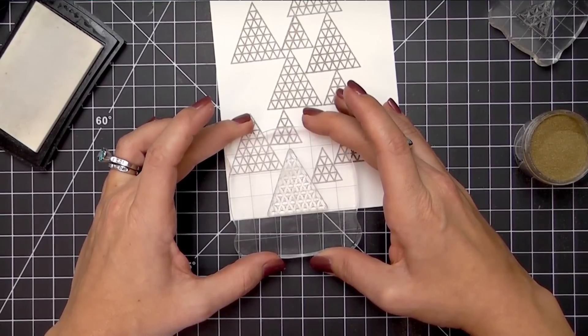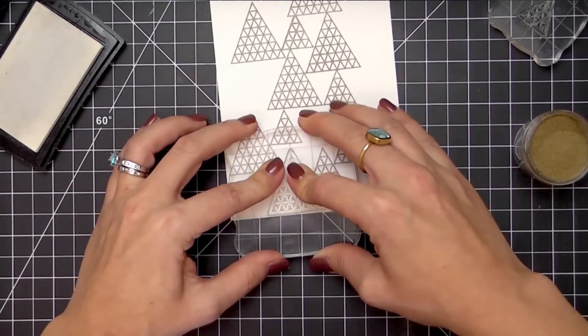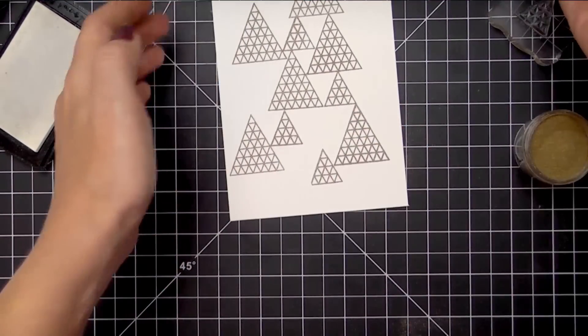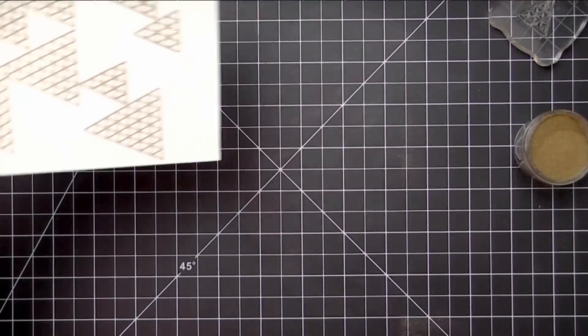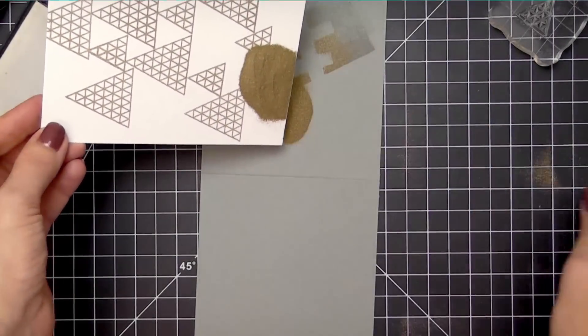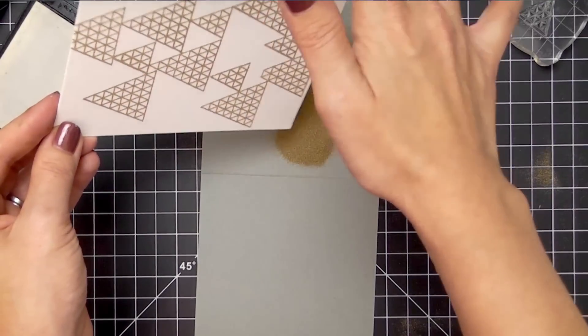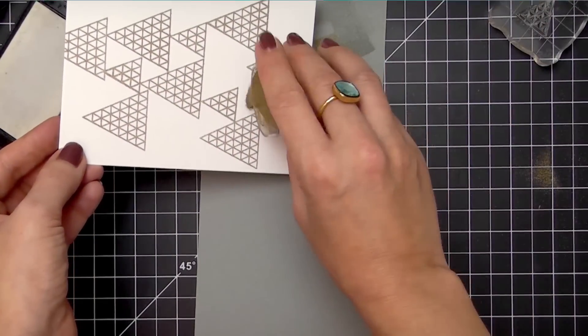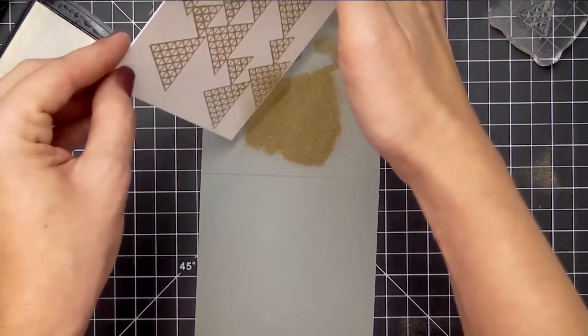Just continue to stamp, sprinkle, and then shake off the excess until you've covered most if not all of your paper. This is what we're going to die cut our stag heads from. The more cards you'll be making, obviously the larger a panel that you'll want to create here.